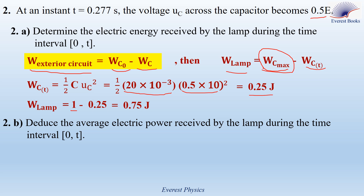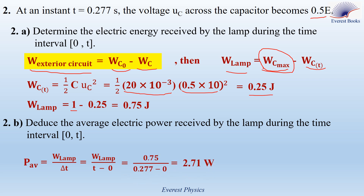Part 2b: deduce the average electric power received by the lamp during the time interval zero to T. The average power is given by the energy received by the lamp divided by the time interval ΔT: P_avg = W_lamp / (T − 0). Substituting values: W_lamp = 0.75 joules and T = 0.277 seconds. Therefore, the average power received by the lamp during the time interval zero to T is equal to 2.71 watts.